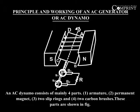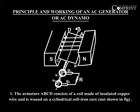Description of an AC dynamo: An AC dynamo consists of mainly four parts — 1. Armature, 2. Permanent magnet, 3. Two slip rings, and 4. Two carbon brushes. These parts are shown in the figure. The armature ABCD consists of a coil made of insulated copper wire and is wound on a cylindrical soft iron core.